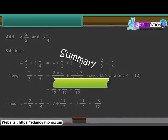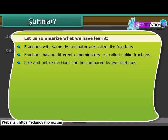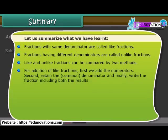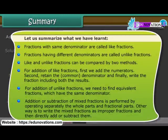Let us summarize what we have learned. Fractions with the same denominator are called like fractions. Fractions having different denominators are called unlike fractions. Like and unlike fractions can be compared by two methods. For addition of like fractions, first we add the numerators, then we retain the common denominator, and finally write the fraction including both the results. For addition of unlike fractions, we need to find equivalent fractions which have the same denominator. Addition or subtraction of mixed fractions is performed by operating separately on the whole parts and fractional parts, or by writing the mixed fractions as improper fractions and then directly adding or subtracting them.